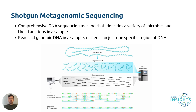For example, 16S sequencing can detect bacteria and archaea, whilst 18S sequencing can detect fungi and other eukaryotes. Shotgun metagenomic sequencing, however, can detect all of these simultaneously. Sequencing all regions of genomic DNA in a sample allows for a comprehensive analysis of microbial communities, including providing insights into both the identity and functions of microorganisms. Often, the genes within a microbial community can tell you much more than just the types of microbes that are there.